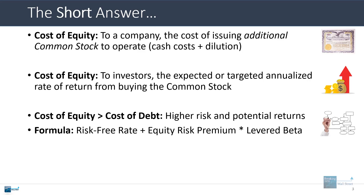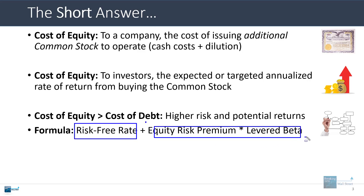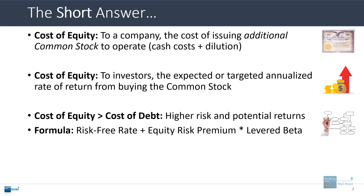The formula for the cost of equity in most cases — the simplest formulation — is the risk-free rate plus the equity risk premium times levered beta. There are other ways to calculate this, which we'll get into, but this is the most common one used in standard valuations.